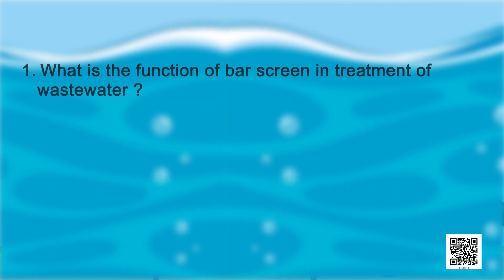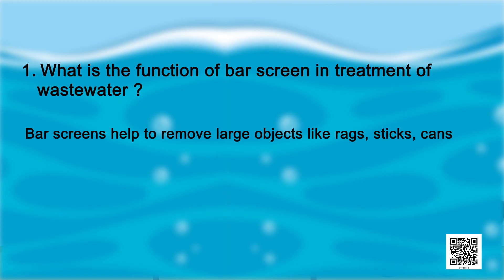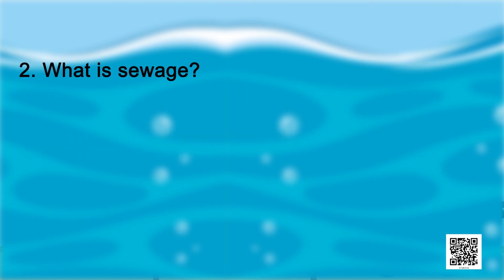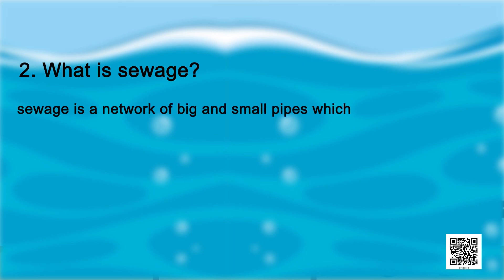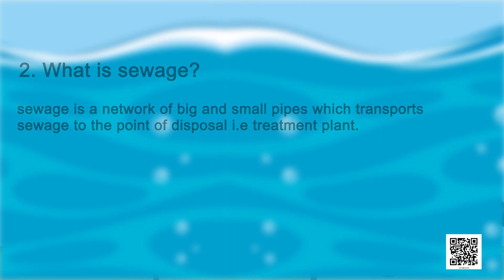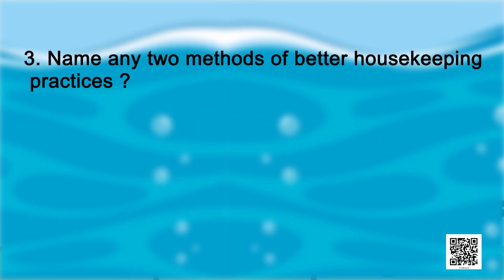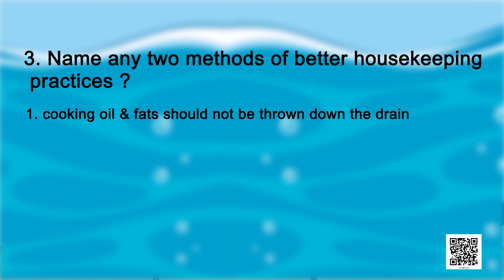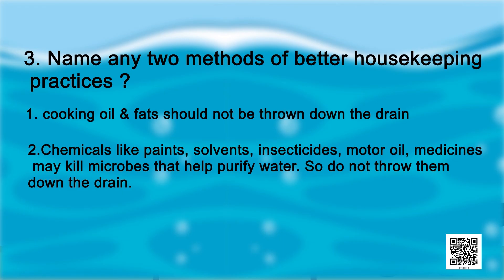What is the function of bar screen in treatment of waste water? Bar screens help to remove large objects like rags, sticks, cans, plastic packets, napkins etc. What is sewerage? Sewerage is a network of big and small pipes which transport sewage to the point of disposal, i.e., the treatment plant. Name any two methods of better housekeeping practices: Cooking oil and fats should not be thrown down the drain. Chemicals like paints, solvents, insecticides, motor oil, medicines may kill microbes that help purify water, so do not throw them down the drain.